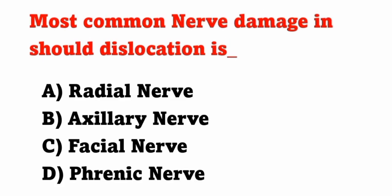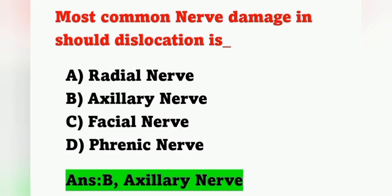Next question: Most common nerve damage in shoulder dislocation is — options: option A, radial nerve; option B, axillary nerve; option C, facial nerve; option D, phrenic nerve. The nerve which is damaged in shoulder dislocation is the axillary nerve. Option B is the correct answer.